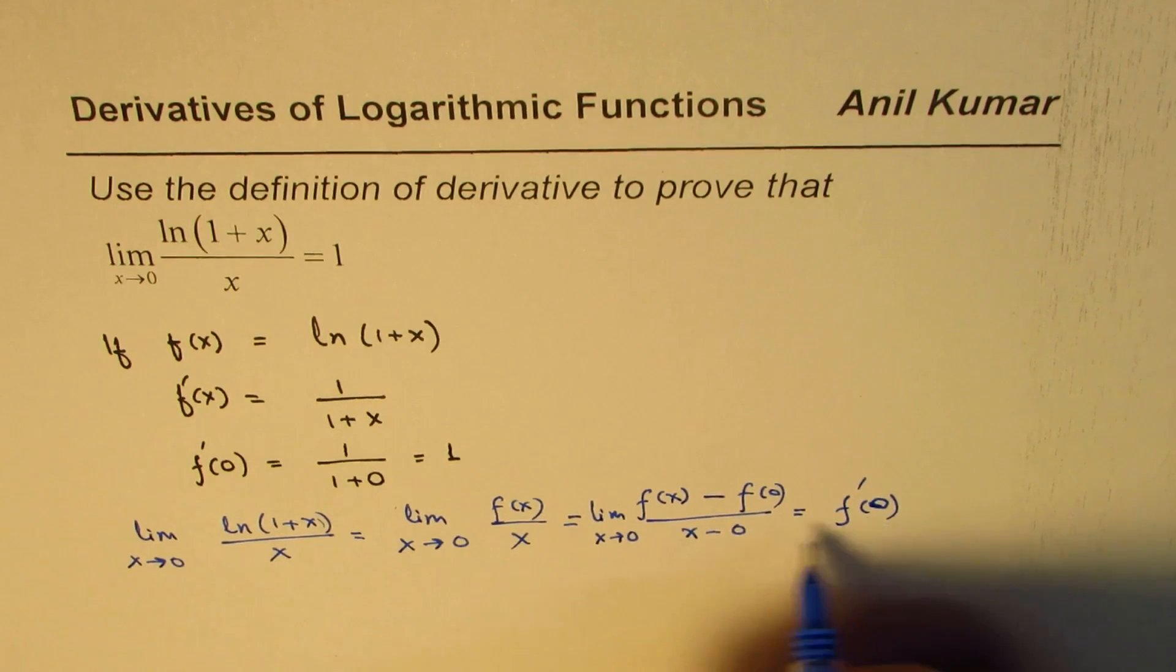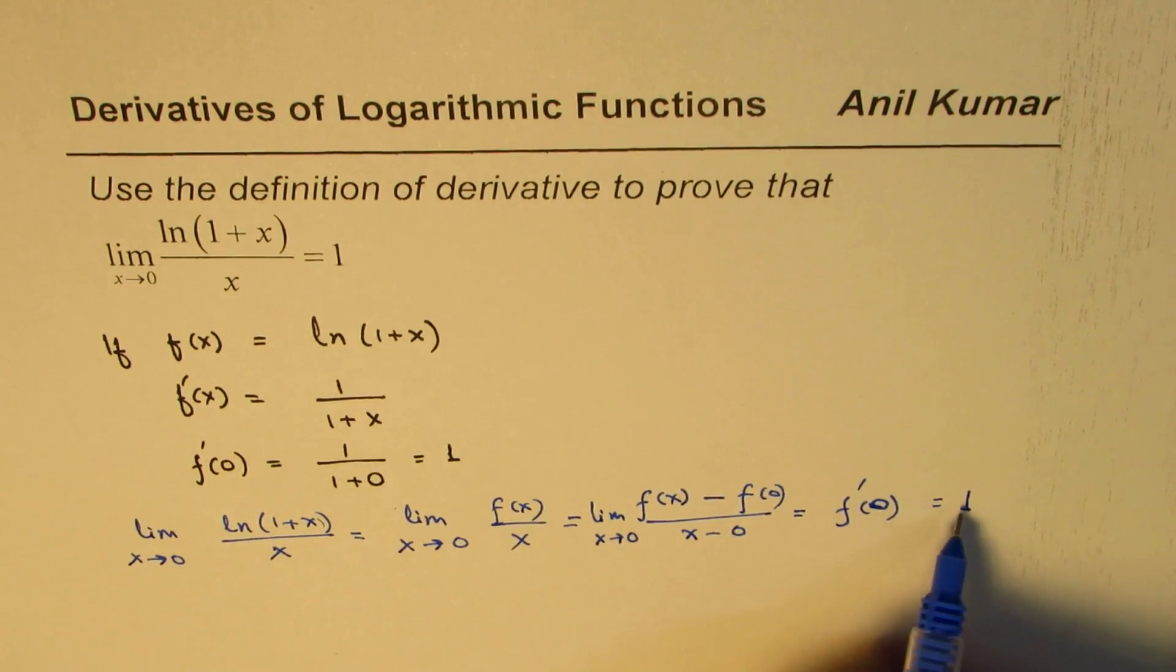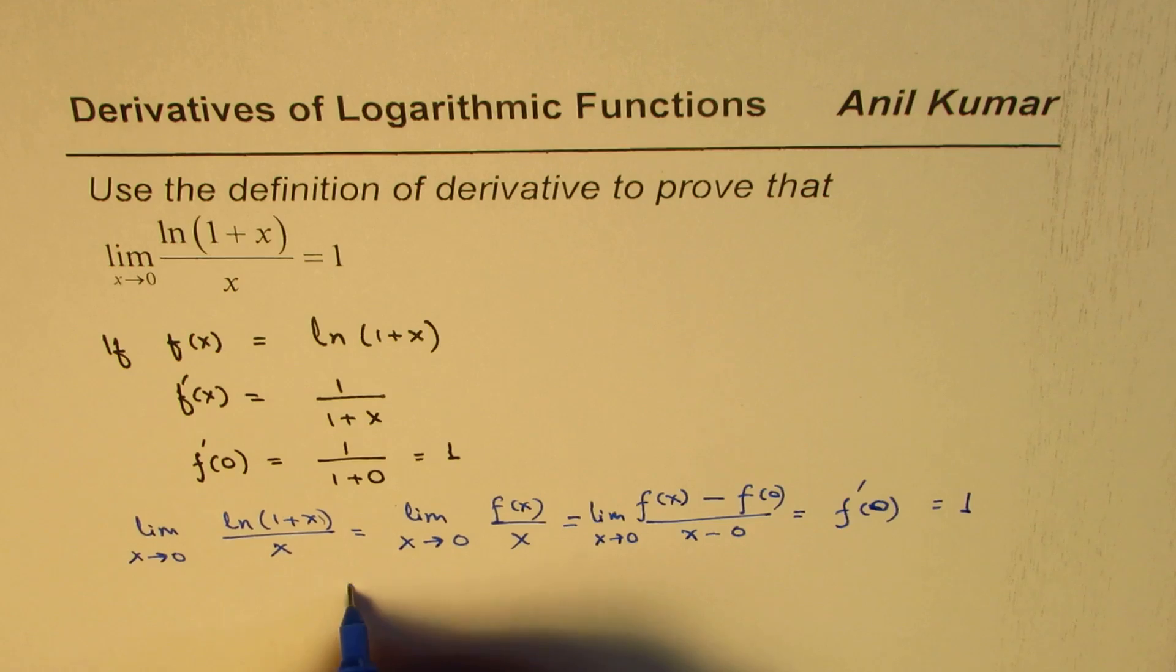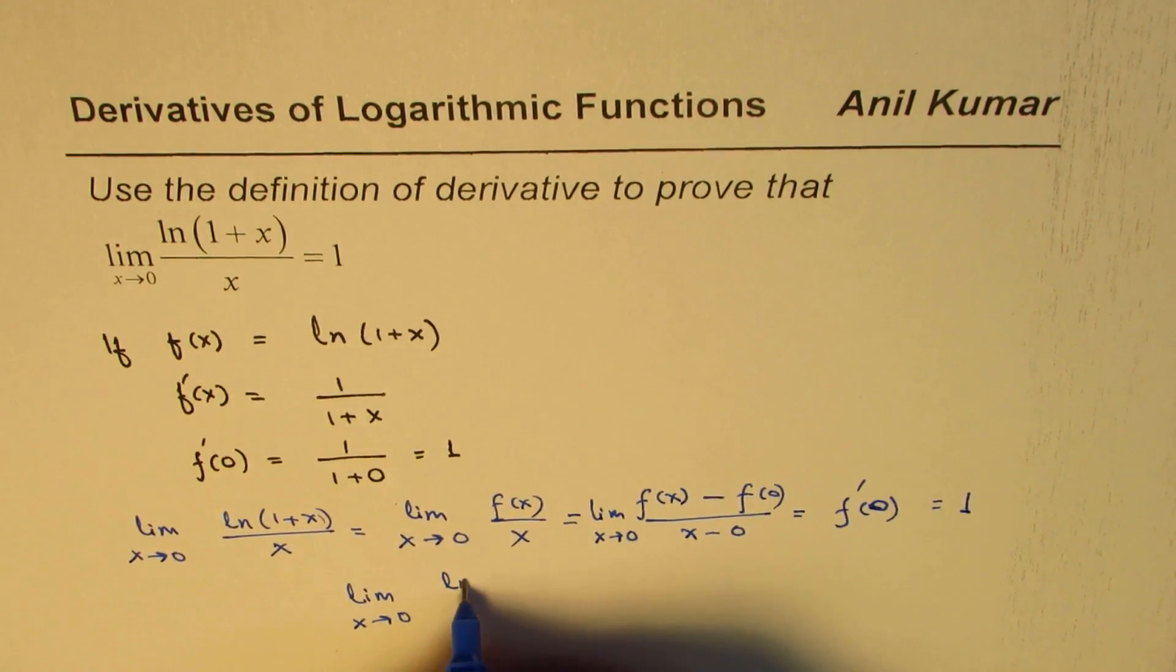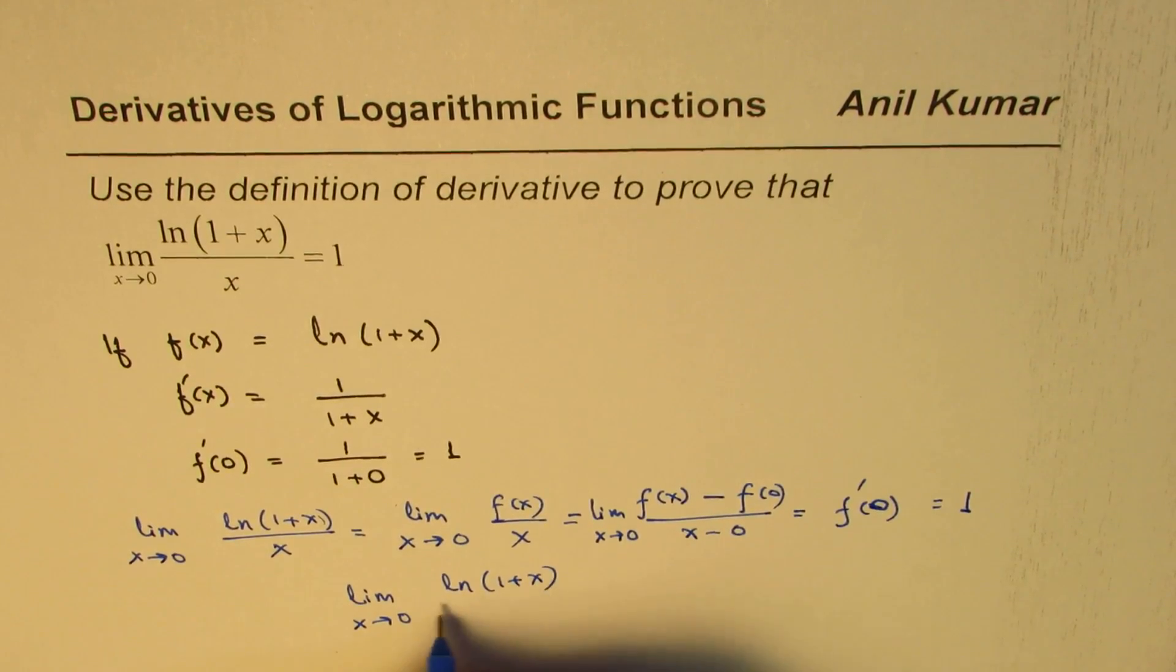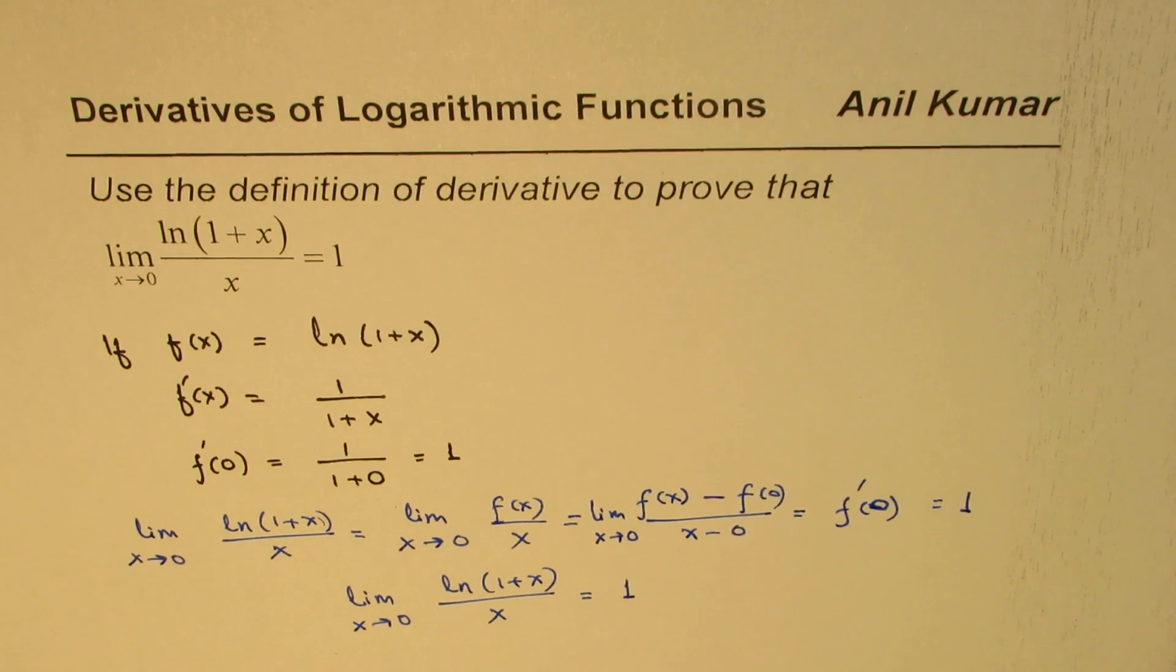But since we know that this derivative at 0 equals 1, we know this limit is 1. So from here, we can show that limit x approaches 0 for ln(1+x) over x equals 1.